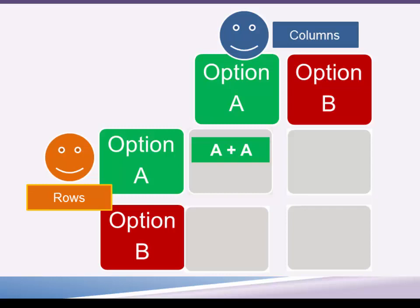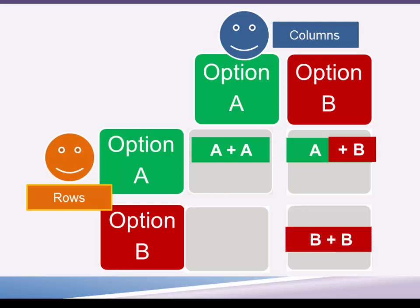If both play option A, the outcome is the sum of A plus A, whatever values are attached to those acts. If orange plays A and blue plays B, the outcome is A plus B according to the values attached to those plays. Similarly, if both blue and orange play option B, the outcome is B plus B. And if orange plays option B and blue plays option A, that's B plus A — just the inverse of when orange played A and blue played B. So we have four combinations of plays.